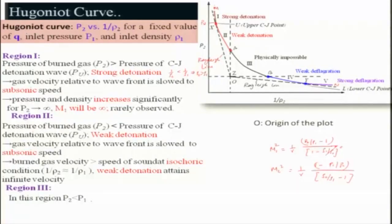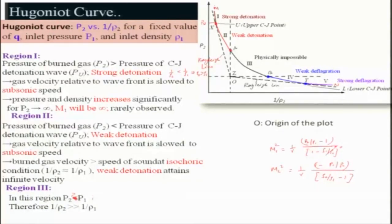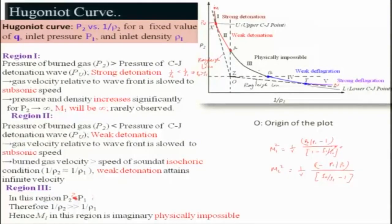In Region 3, P2 is greater than P1 but 1 over rho2 is greater than 1 over rho1, meaning rho2 is smaller than rho1. In this case, the term (1 minus rho1 over rho2) becomes greater than 1, making M1 squared imaginary or negative. Therefore, Region 3 is physically impossible.